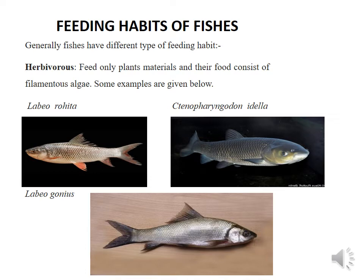Herbivorous fishes are those which feed only on plant materials, and their food consists of filamentous algae. Examples include Labeo rohita, Labeo gonius, and Ctenopharyngodon idella. During the early stages of its life cycle, Labeo rohita eats mainly zooplankton, but as it grows it eats more and more phytoplankton. Labeo gonius is also herbivorous, feeding mainly on algae and higher plant material. Ctenopharyngodon idella feeds on a wide range of aquatic vegetation and is capable of consuming 40–300% of its body mass per day of plant material depending on age and size; adults are completely vegetarian.